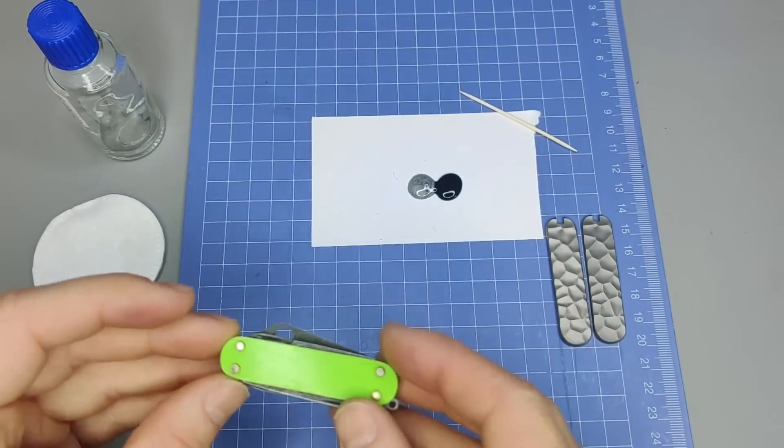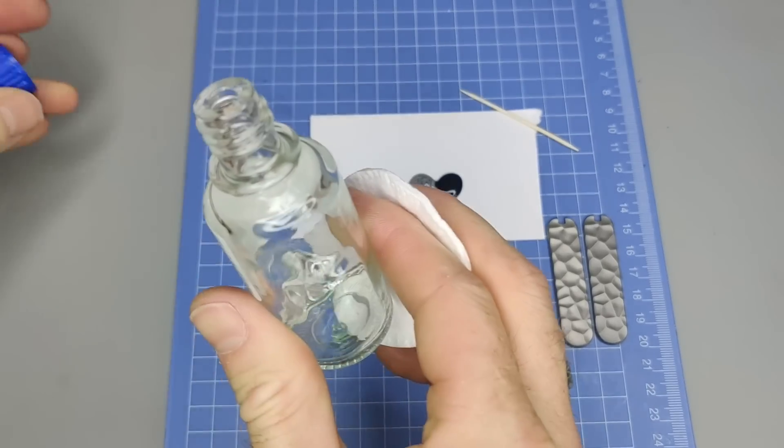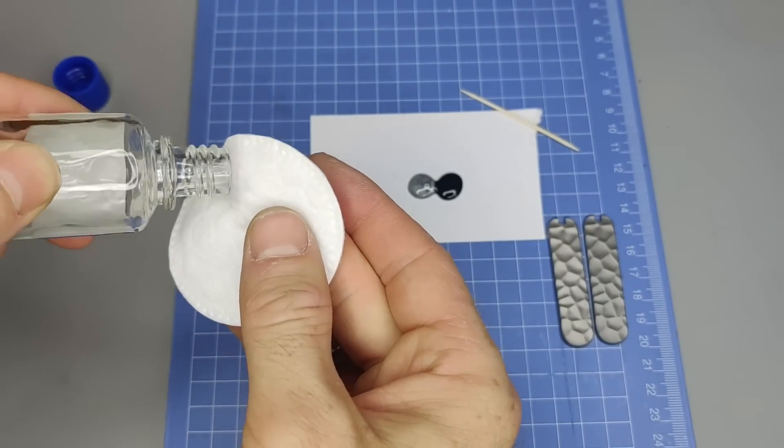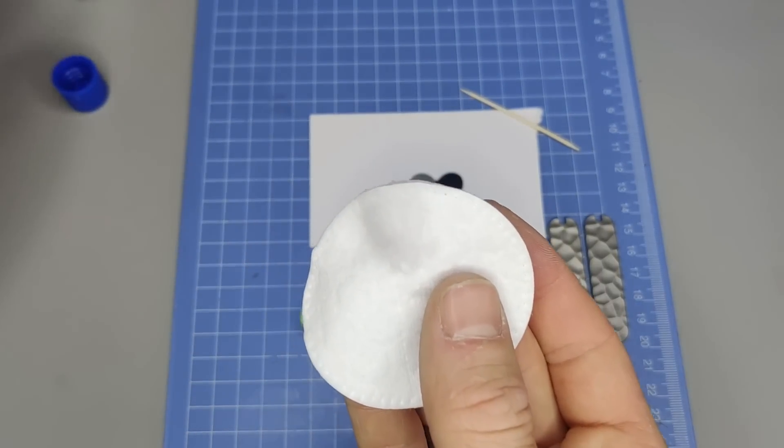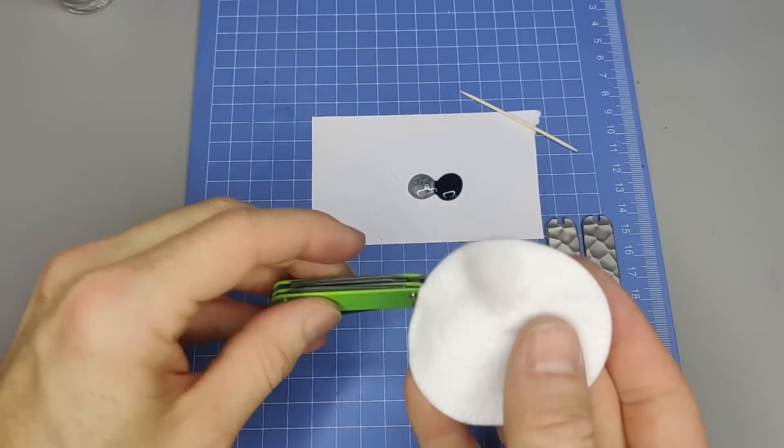Alright, so next thing we're going to do now is we're going to go ahead and degrease both the knife and the scales, just to make sure that there's nothing oily on it that's going to make it difficult to epoxy the scales on.